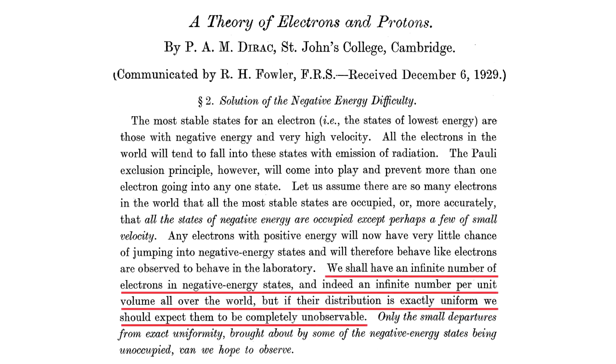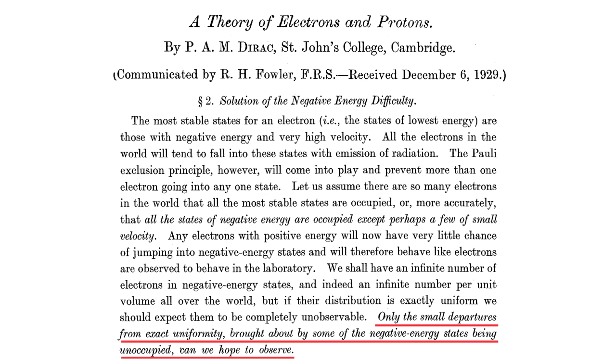We shall have an infinite number of electrons in negative energy states, and indeed an infinite number per unit volume all over the world. But if their distribution is exactly uniform, we should expect them to be completely unobservable. Only the small departures from exact uniformity brought about by some of the negative energy states being unoccupied can we hope to observe.